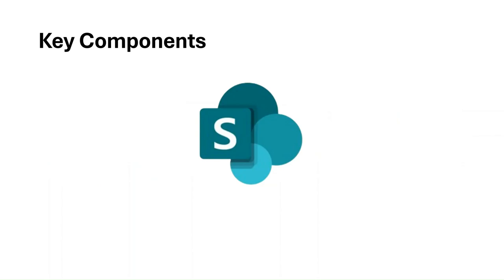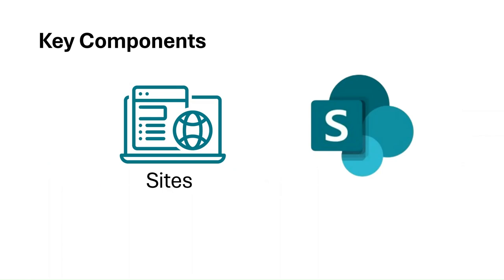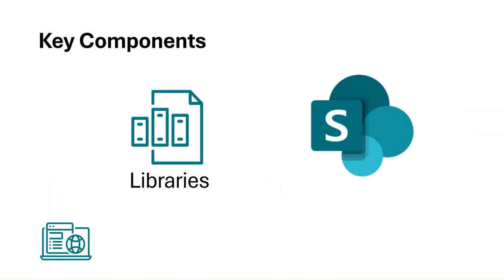To really understand how SharePoint works, let's break it down into its key components. First, we have sites — these are digital workspaces for teams or projects. Think of a SharePoint site like a virtual office, where you can keep all related files, conversations, and resources in one place. For example, a marketing team might have a site for planning campaigns, with a calendar for deadlines and a document library for storing creative assets. Next, there are document libraries — where all your files live. But it's more than just a folder system. SharePoint libraries allow version control so you never lose track of changes, and you can add metadata to make searching easier.